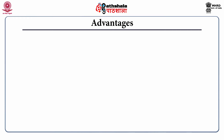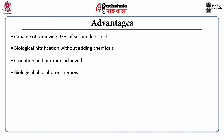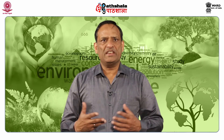The advantages of activated sludge process include: it is capable of removing up to 97% of suspended solids; biological nitrification without adding chemicals; oxidation and nitrification is achieved; biological phosphorus is removed; solids and liquids are separated; organics are removed; the process is cost effective; easily maintainable; and the system is self-sustaining.